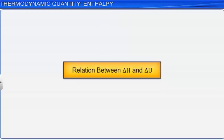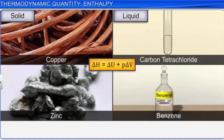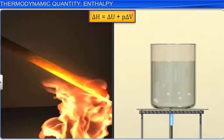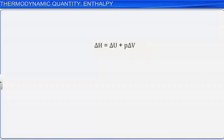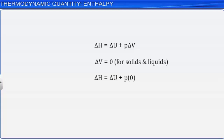Let's now look at the relation between delta H and delta U. When we deal with solids and liquids, the difference between delta U and delta H is not significant. This is because solids and liquids do not show significant change in volume when heated. Thus, if the change in volume delta V is insignificant, it implies that delta H equals delta U.